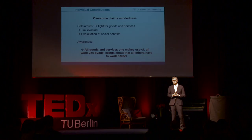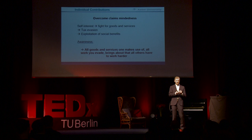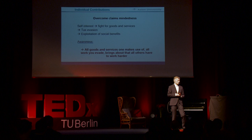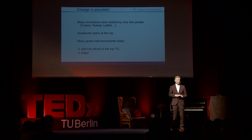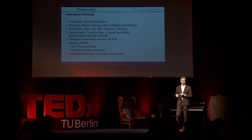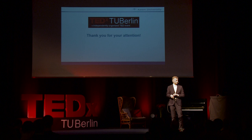If we have a meditation about these three statements, in the long run — maybe after 10 or 20 years — we will change our behavior: what we buy or don't buy, what we do with our money, and maybe even our jobs, in some direction which fits better to what we really want. Many revolutions were started by very few people. An avalanche always starts at the top with very few small stones, then runs down to the valley. We have many grassroots movements today, so don't be afraid of the top 1% or maybe 0.1%. There's reason for hope — we can change. There's lots of literature on this topic. Thank you.